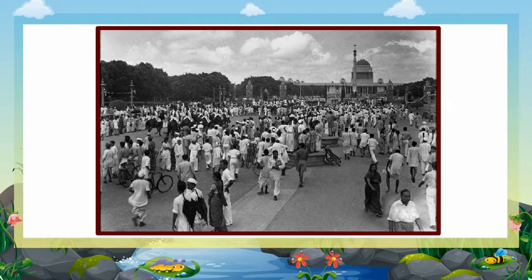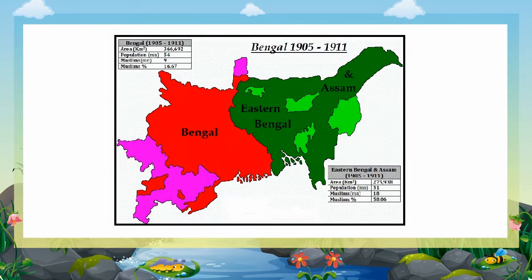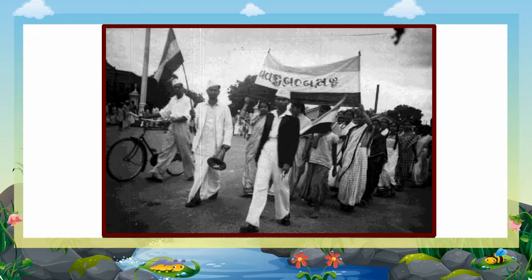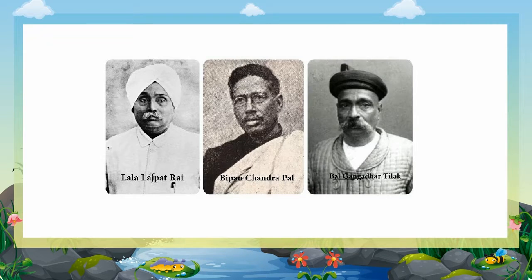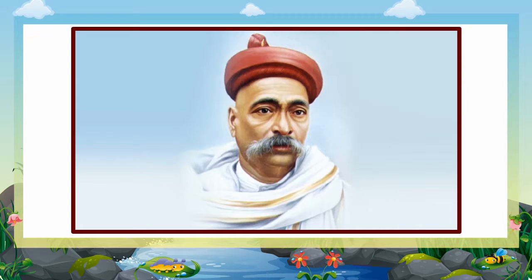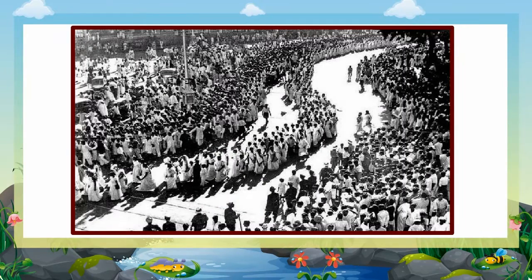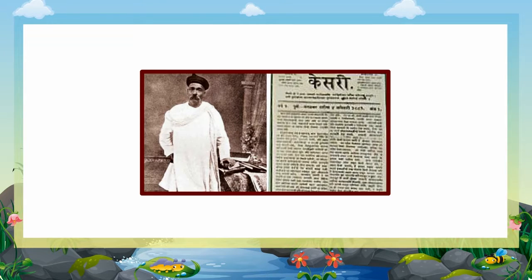The number of young people joining the movement increased. In 1905, Bengal's partition was declared, against which the Swadeshi and Boycott movements were started. Prominent leaders of the Indian National Congress of that era were Bipin Chandra Pal, Lala Lajpat Rai, and Bal Gangadhar Tilak — these three leaders were often called Lal Bal Pal. They were from the extremist group. Bal Gangadhar Tilak declared, 'Freedom is my birthright and I shall have it.' These leaders inspired the people to fight for their rights. Tilak also wrote against the British in his paper Kesari.